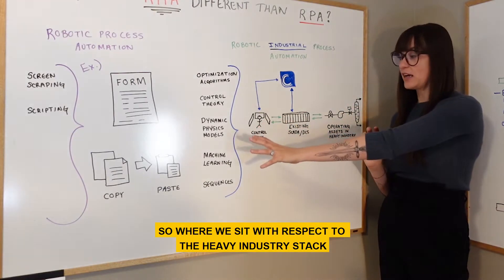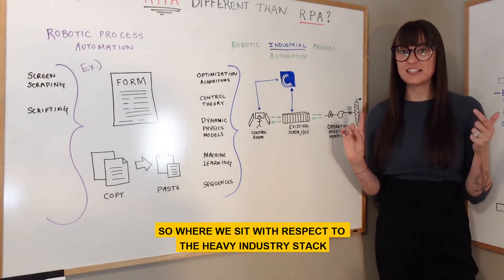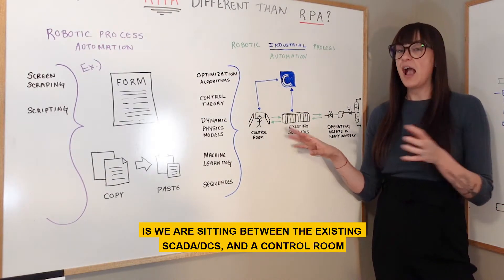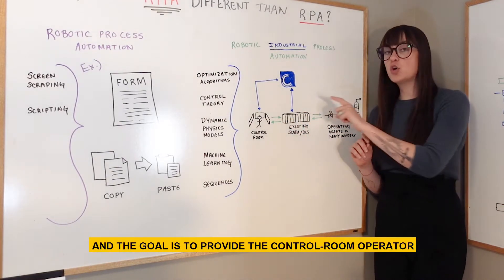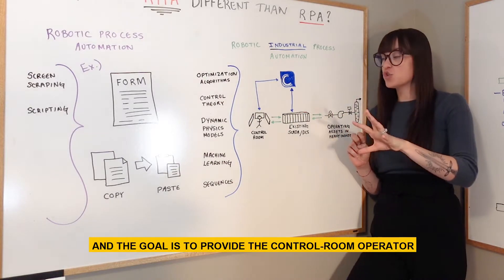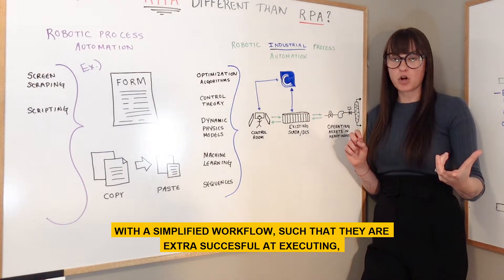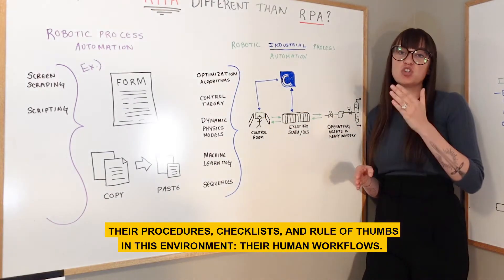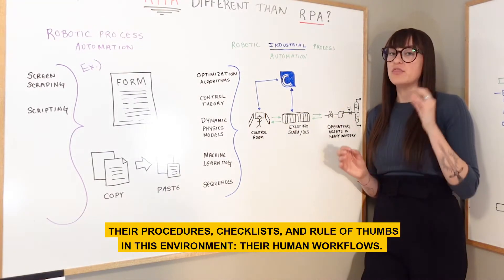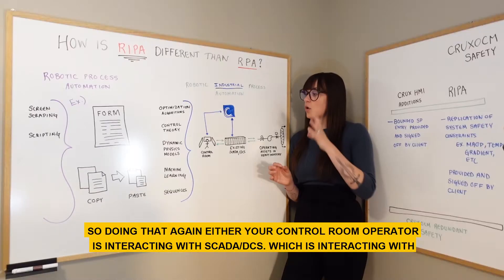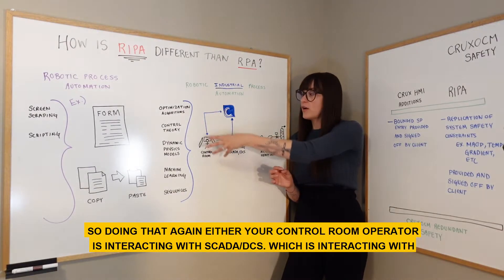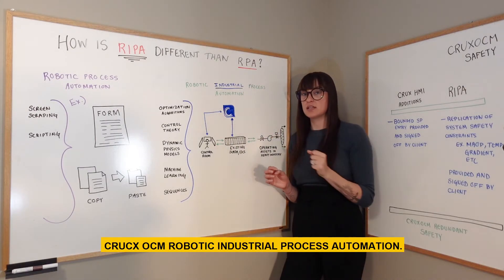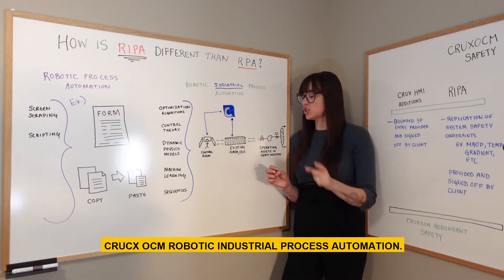Where we sit with respect to the heavy industry stack is between the existing SCADA/DCS and the control room. The goal is to provide the control room operator with a simplified workflow so they are extra successful at executing their procedures, checklists, and rules of thumb — their human workflows.